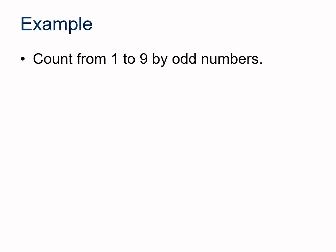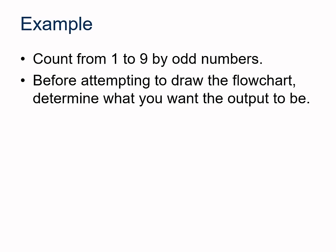So let's take a look at an example. What we want is a program, a flowchart, for counting from 1 to 9 but only in odd numbers. Before attempting to draw the flowchart, what do you think the output might be? Also, what is the first block?